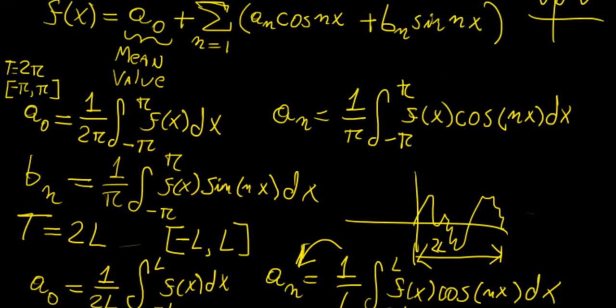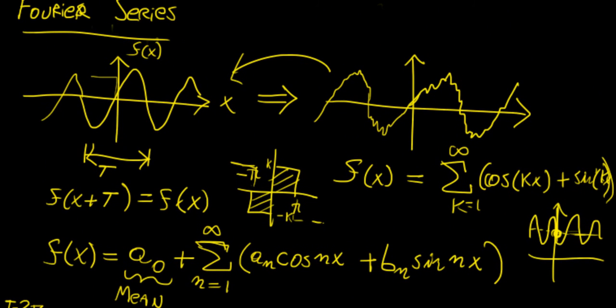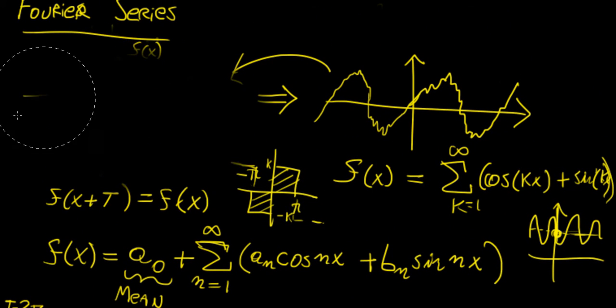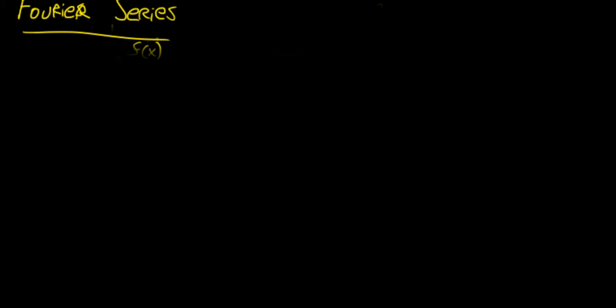One last thing I wanted to mention is a few really important properties of Fourier series. The function f(x) can either be an even function, an odd function, or neither. There are simplifications of a Fourier series depending on the type of function that we have.